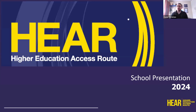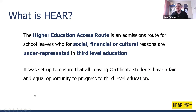The Higher Education Access Route is an admissions route for sixth-year students who, for social, financial, or cultural reasons, are underrepresented in third level. In simple terms, the scheme is set up so that all Leaving Certificate students have a fair and equal opportunity to go to college — listening to who isn't coming to college, understanding the mechanisms that stopped people, and helping students like yourselves get to that next stage.